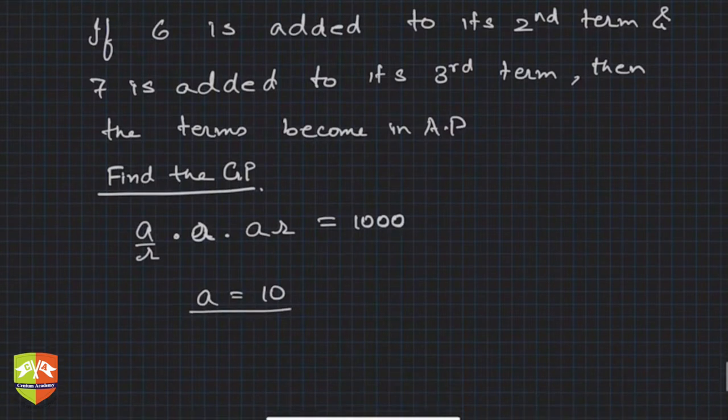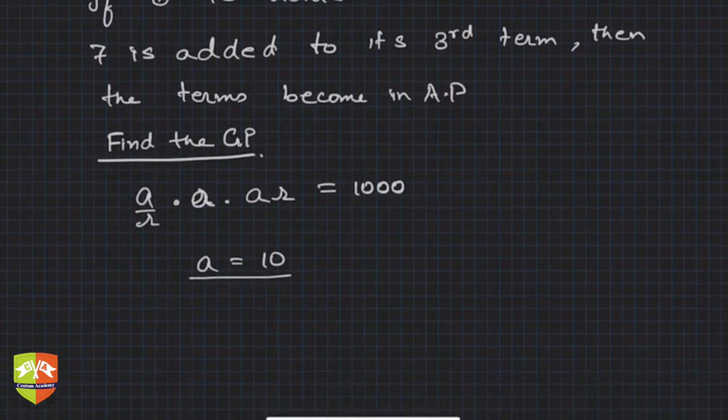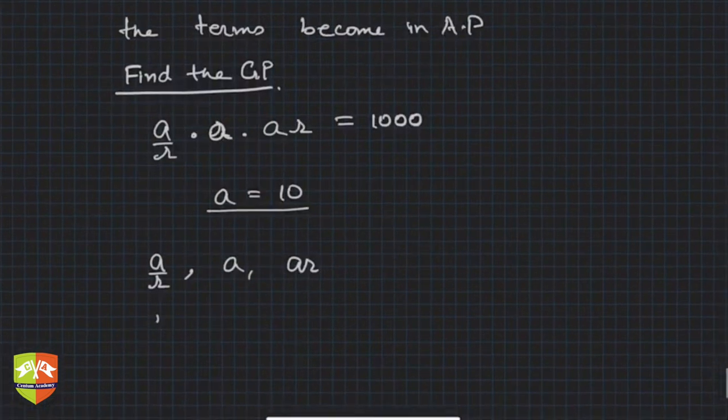Now it is said that if 6 is added to second term, so what will be the second term? 6 is added, so 16 will be the second term. Now a/r, a, and ar were originally in GP, so 10/r, 10, and 10r are in GP.